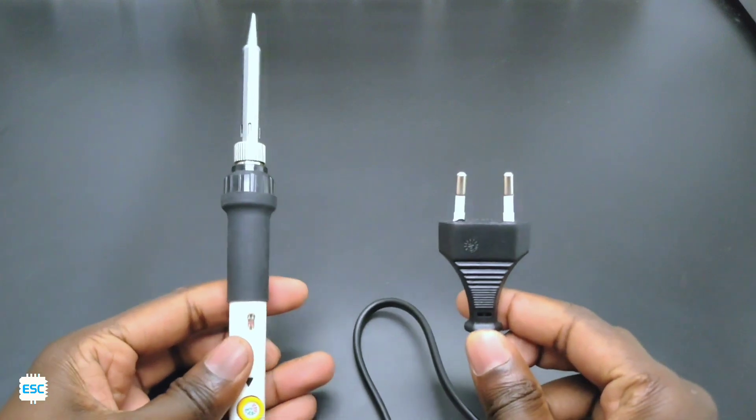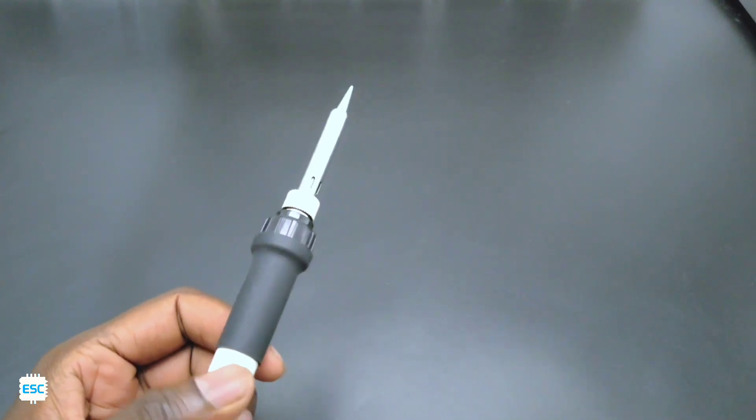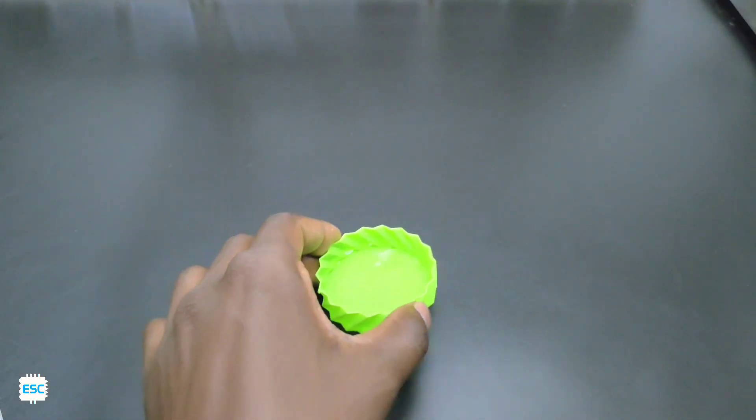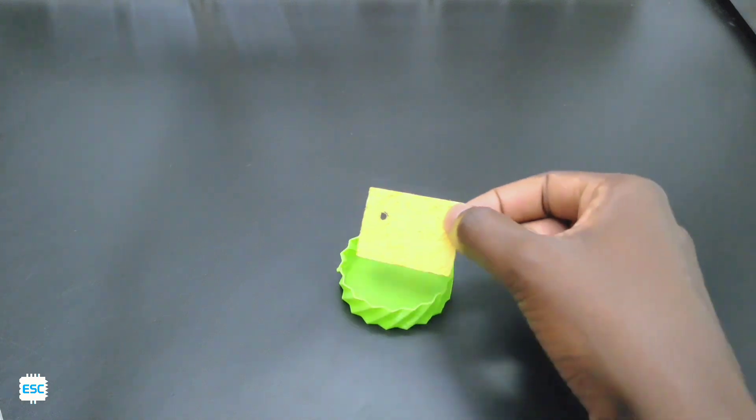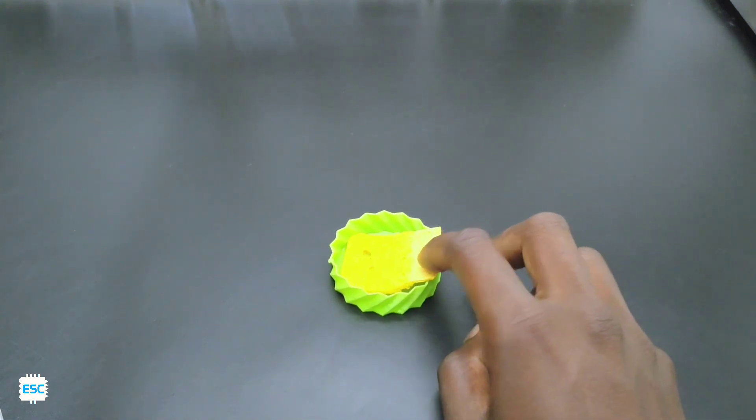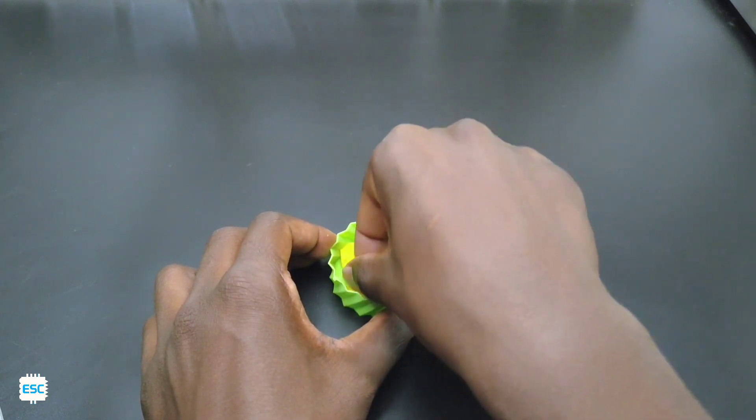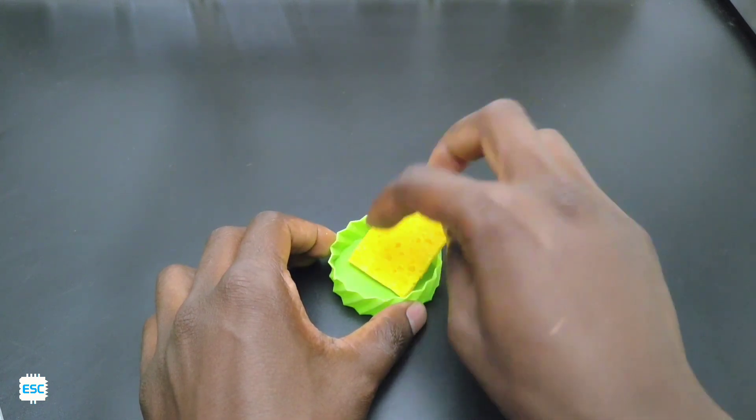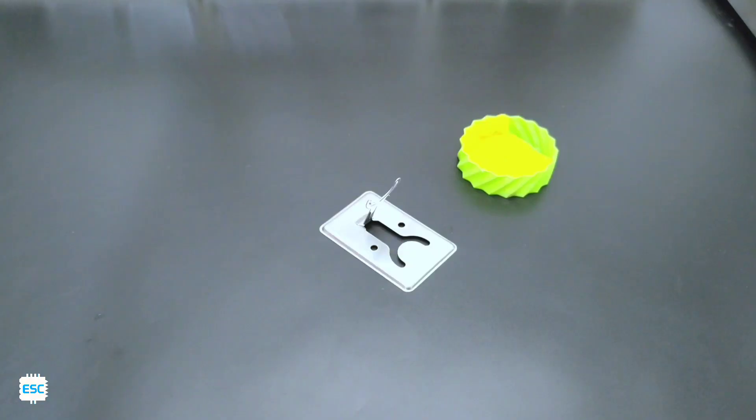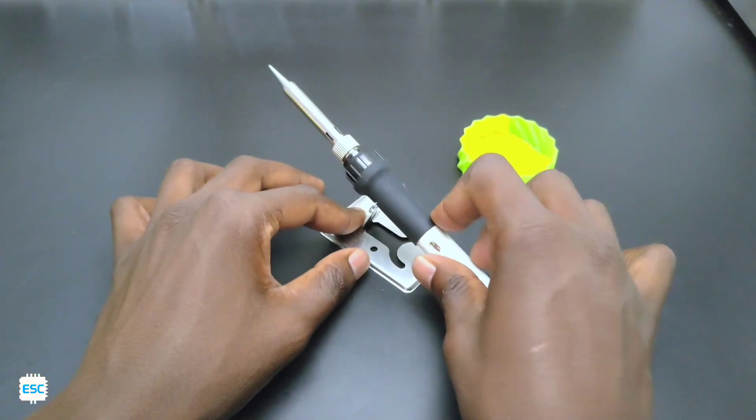Now let's test it. Before turning on the soldering iron, let's set up the sponge. For that take a little amount of water in a small container like this. Put the cleaning sponge into the water and you can see that all the water is absorbed by the sponge instantly. Now we can place the soldering iron on the stand like this.